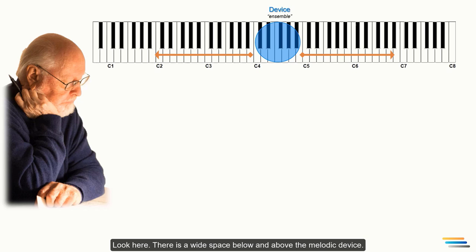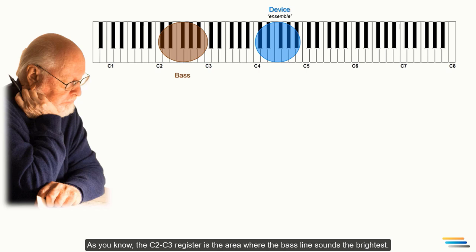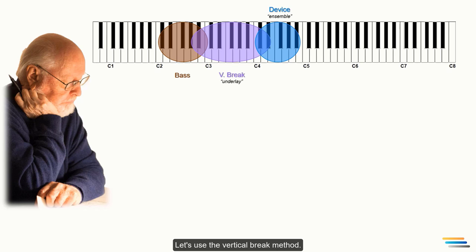The main essence of orchestration is to fill this space using different methods. Thus, the bass line will be located in the low register. As you know, the C2-C3 register is the area where the bass line sounds the brightest. But, of course, this area can be further expanded with active doublings. See, there is a wide space between the melody and the bass line. Let's use the vertical break method. At the same time, some portion of the method will be applied above the melody.